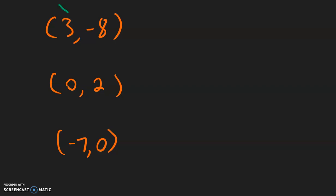In this example, 3 is x and negative 8 is y. The inverse will be negative 8 comma 3. For 0, 2, the inverse will be 2, 0.